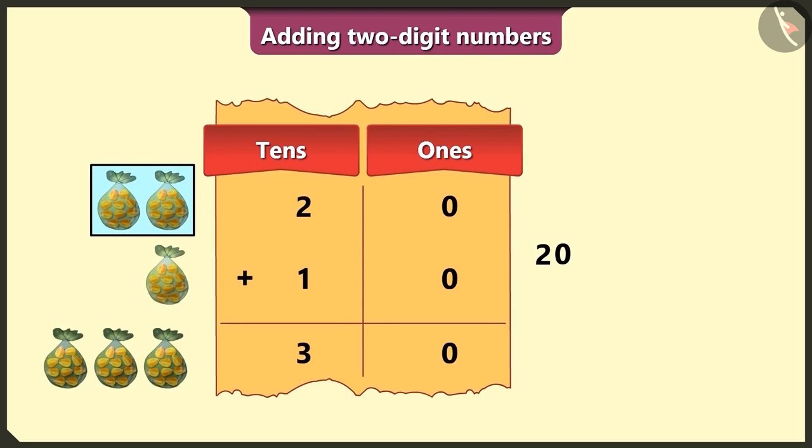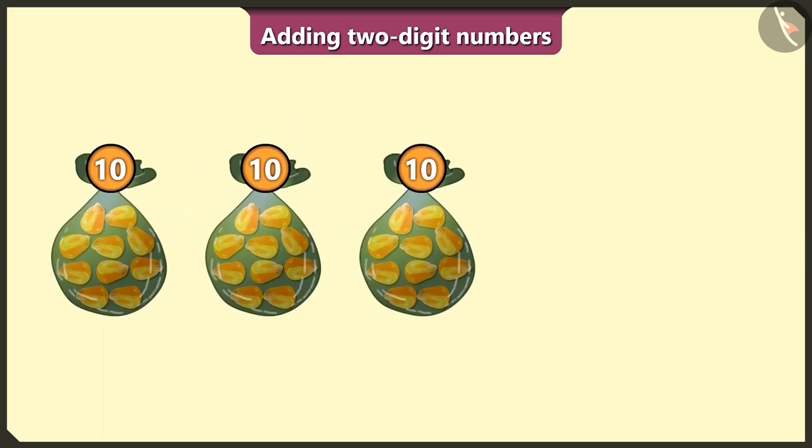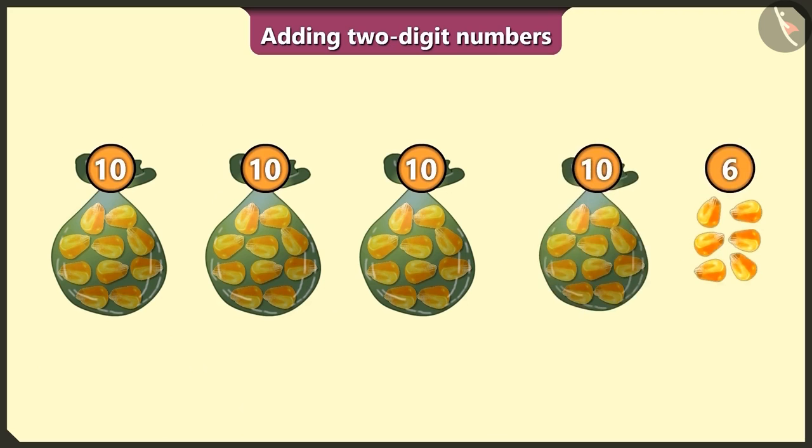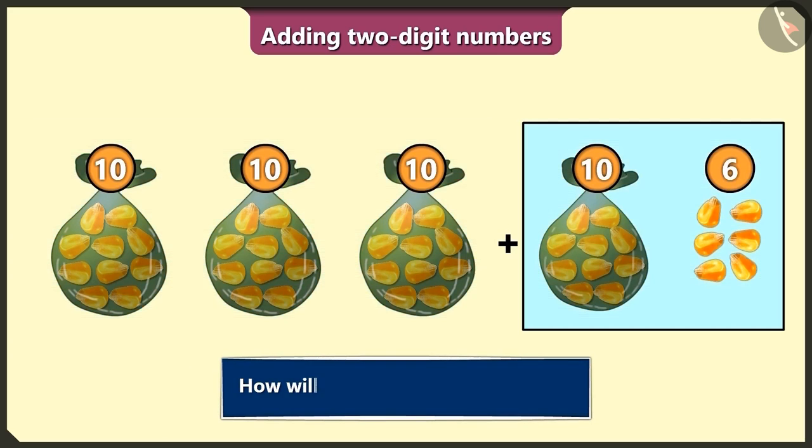Yes, adding 20 grains and 10 more will give us a total of 30 grains. Now see, here are 30 grains. To these, I will add 16 more. So how do we add 30 and 16?